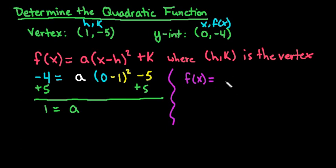so I don't have to write anything there, times x minus my h term plus my k term. So this is my vertex form.